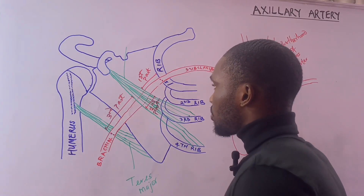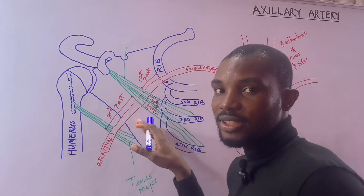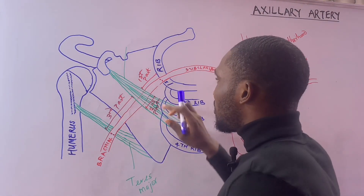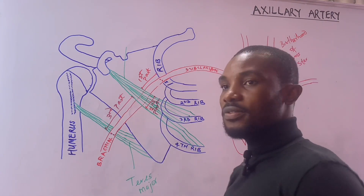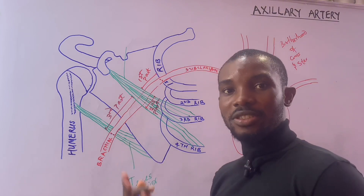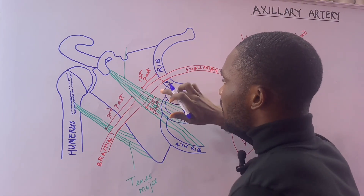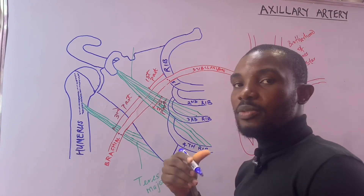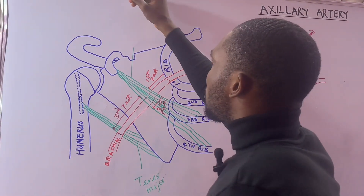For the branches of the axillary artery, we know that there is the first part, second part, and third part. The first part gives off one branch, the second part gives off two branches, and the third part gives off three branches. So we discuss the branch of the first part, the two branches of the second part, and the three branches of the third part.